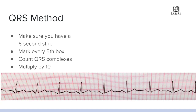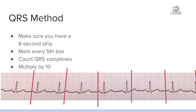Here we have a strip cut to six seconds. We count every five small boxes to mark one-second intervals — five boxes equals one second — going through until we have six one-second intervals marked on the strip. Each space between the lines counts as one second because there are five blocks in between each line.